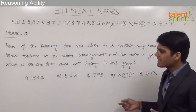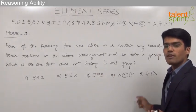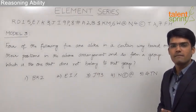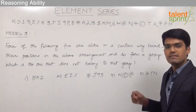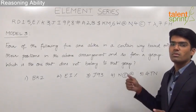Now the question says out of these five groups four are alike in a certain way and hence they form a group. We need to find out that triplet which does not belong to the given group.